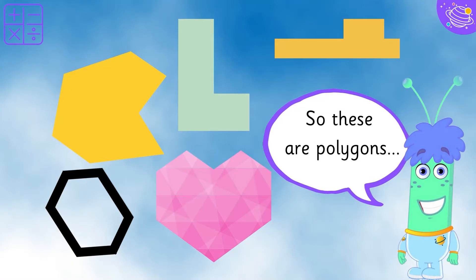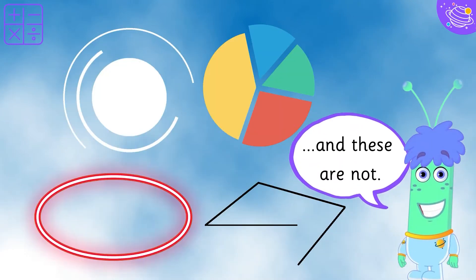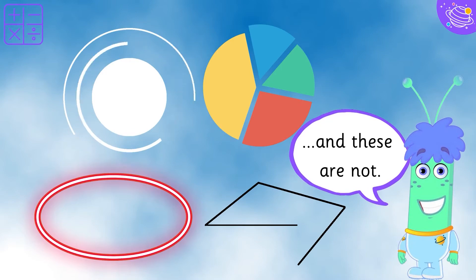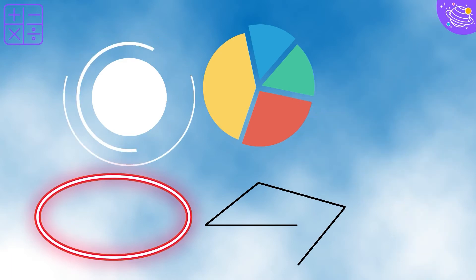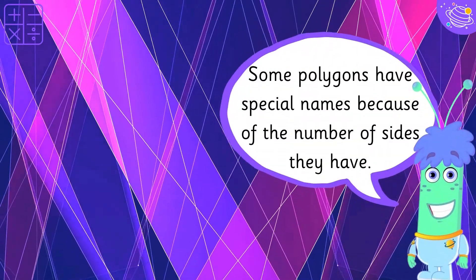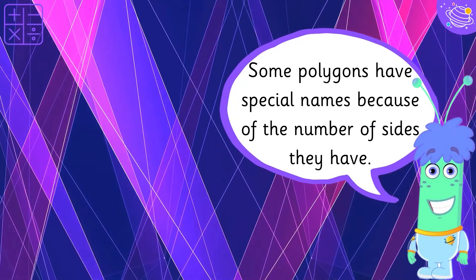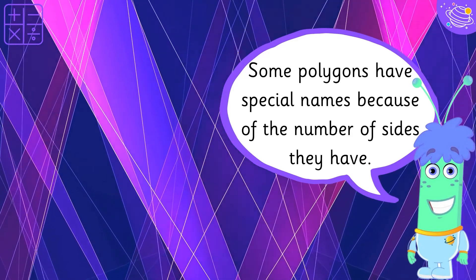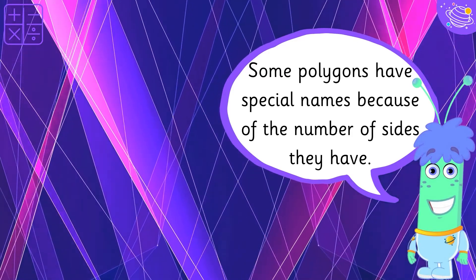These are polygons, and these are not. Some polygons have special names because of the number of sides they have.